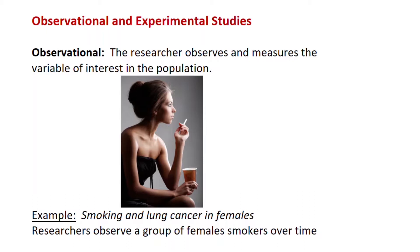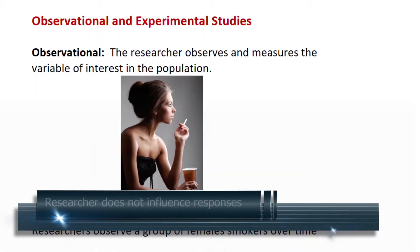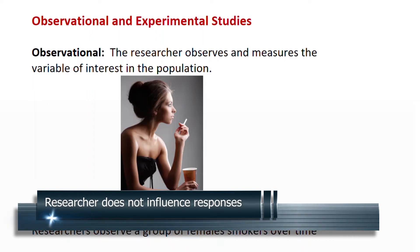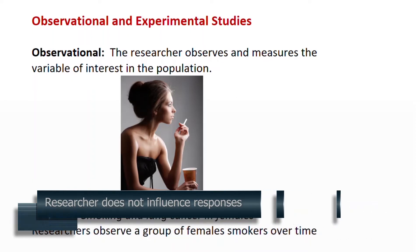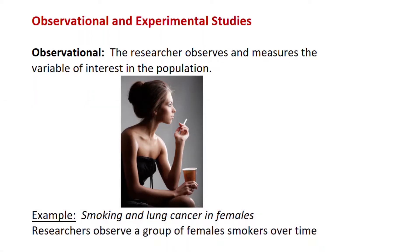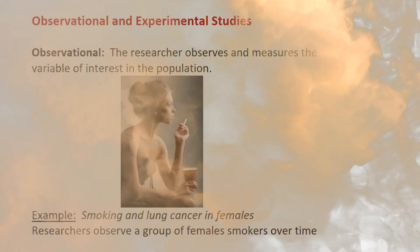There are two types of studies we talk about: observational and experimental. In observational studies the researcher just observes and measures the variable of interest in the population of interest. He or she doesn't try to influence any of the responses. For example, if you were interested in smoking and lung cancer in females, you would identify a group of female smokers and observe and measure their health impacts over time.